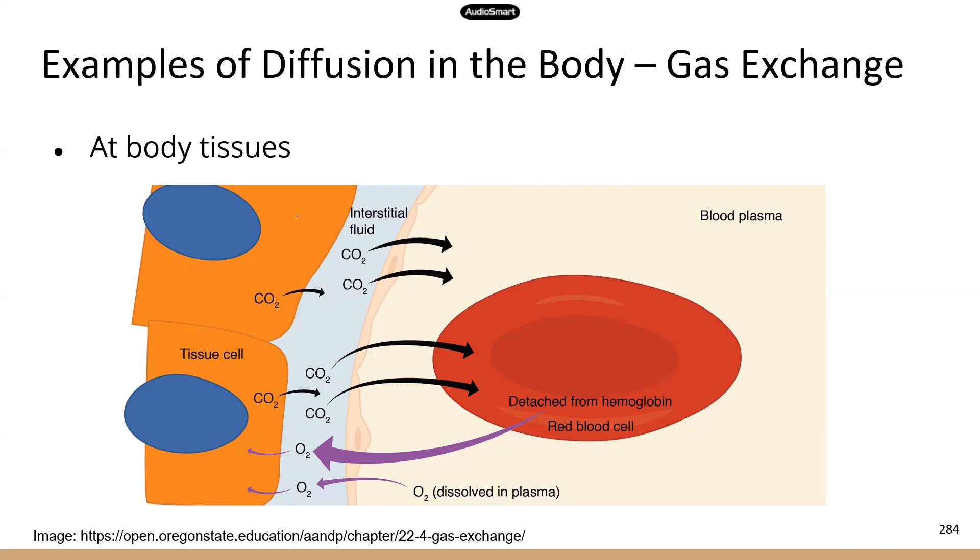At body tissues, you can see that these orange blocks, those are cells. So we can see two tissue cells on the left. And then we have blood vessels, which is over here. And then there is one red blood cell on this picture.